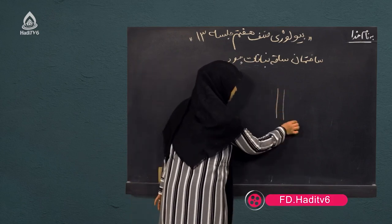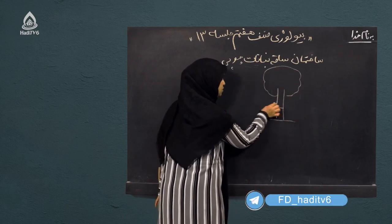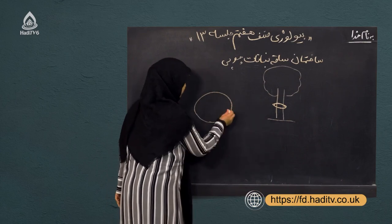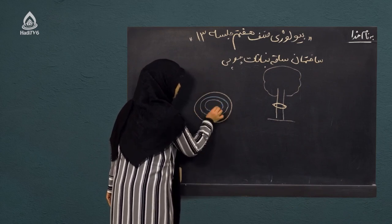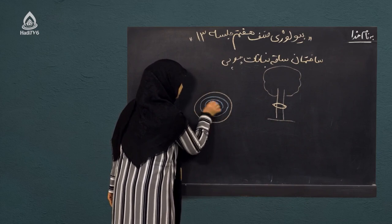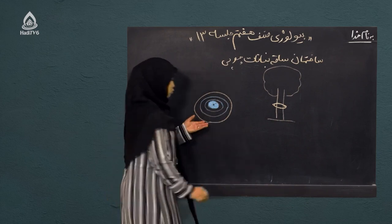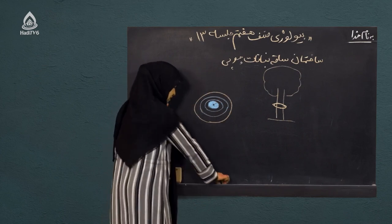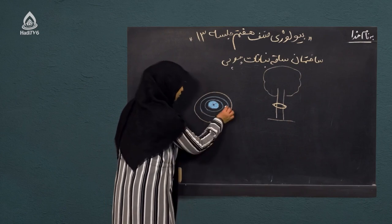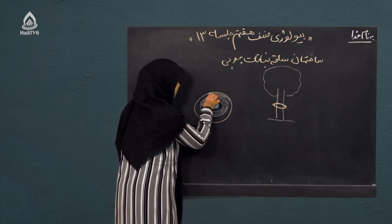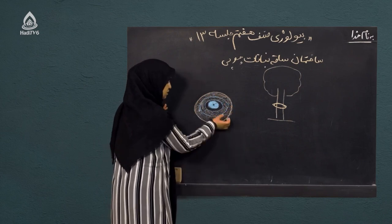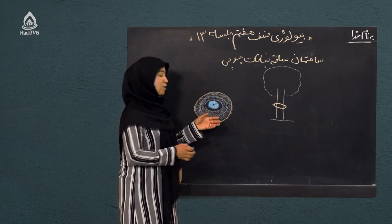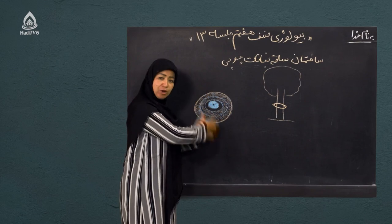اگر یک درخت باشه و ما تنه درخت را قطع کنیم و از بالا به آن نگاه کنیم، یعنی یک برش عرضی داشته باشیم، یک سری حلقه‌هایی را در این تنه درخت می‌بینیم. امروز می‌خوانیم که این دایره‌ها چه هستند، هر کدام نشانه‌دهنده چه هستند، چرا بعضی رنگ تیره دارند و بعضی رنگ روشن. ابتدا ساختمان میکروسکوپی را می‌خوانیم.